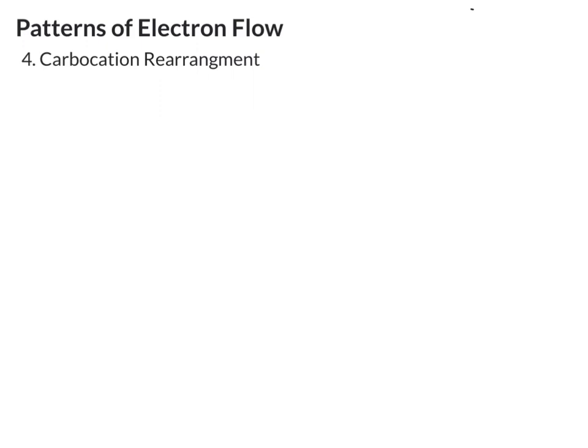The fourth and final pattern of electron flow that we're going to discuss is carbocation rearrangement. Before we look at what this is, we need to spend some time looking at the stability of carbocations.